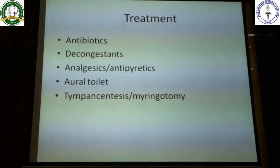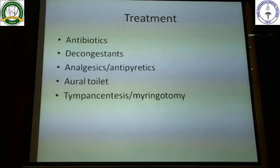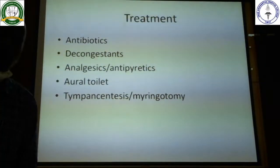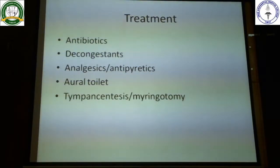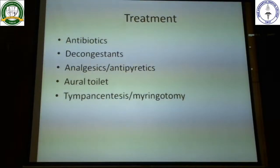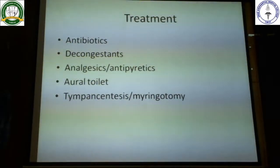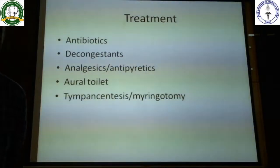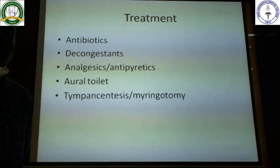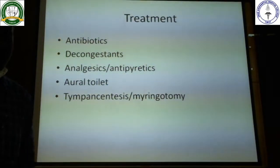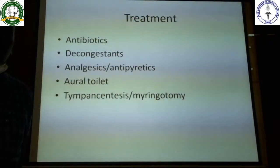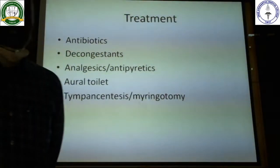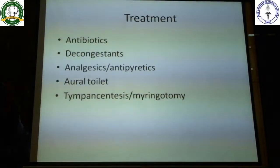Management of acute otitis media: the commonest antibiotics are prescribed according to local sensitivity. The organisms involved — Streptococcus pneumoniae, Staphylococcus aureus, Haemophilus influenzae, Proteus — guide antibiotic selection. The most commonly prescribed antibiotic is amoxicillin with clavulanic acid — 40 mg/kg body weight in children; 625 mg (500 mg amoxicillin + 125 mg clavulanic acid) in adults. If the patient is sensitive to penicillin-group antibiotics, alternatives include macrolides like azithromycin or quinolones like ciprofloxacin or ofloxacin.